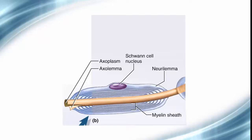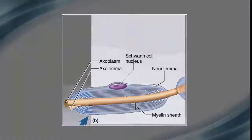In the peripheral nervous system, the glial cells called Schwann cells coil themselves around axons over and over again, pushing their cytoplasm to the periphery and forming a fatty myelin sheath. This process is so critical that if there is a breakdown in myelin, then there are severe consequences. Let's watch an animation about conduction velocities in unmyelinated fibers versus myelinated fibers.